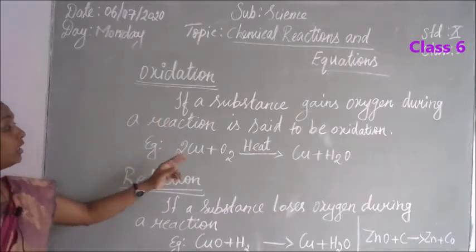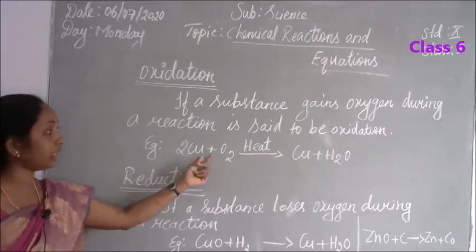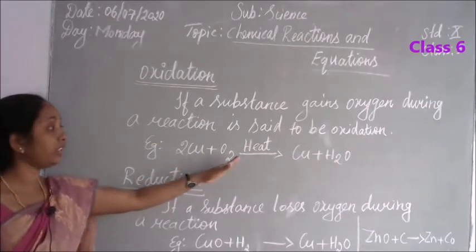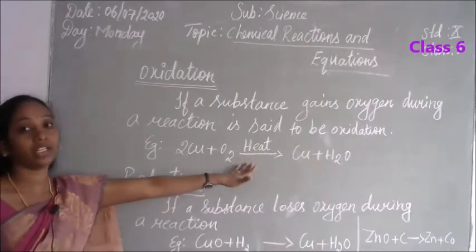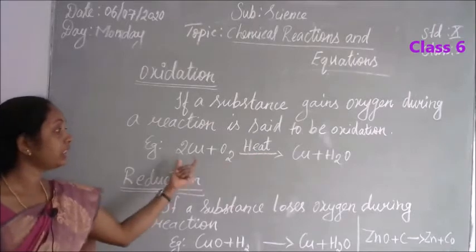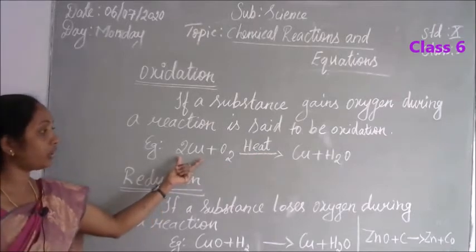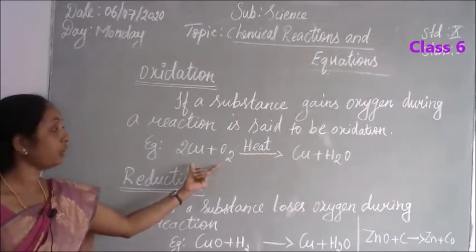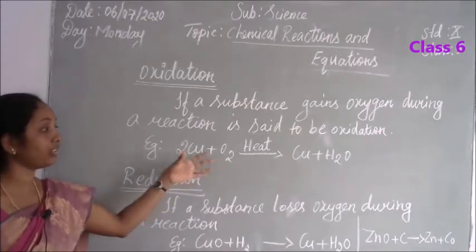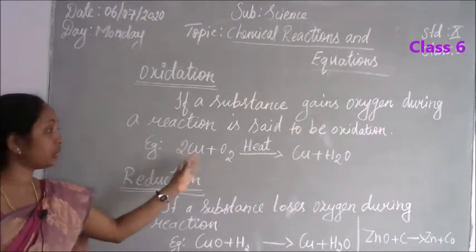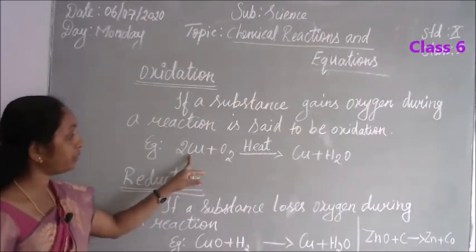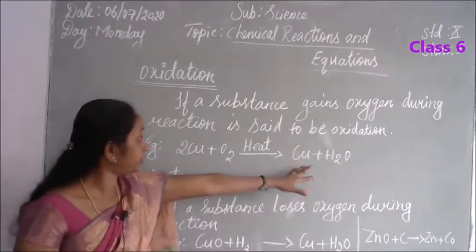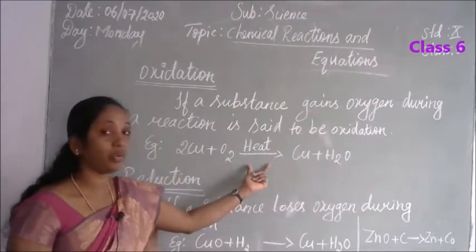Whenever chemical reactions are happening, the chemical substance will absorb or gain the oxygen — that is called an oxidation reaction. For example, we can see 2 molecules of copper combined with 2 molecules of oxygen in the presence of heat energy.